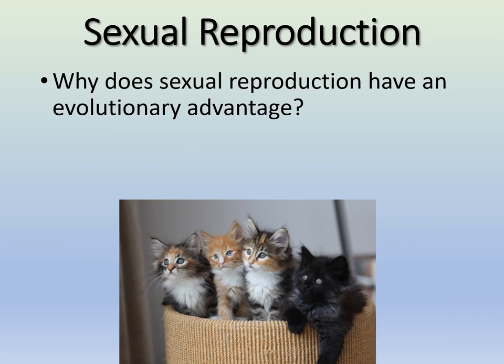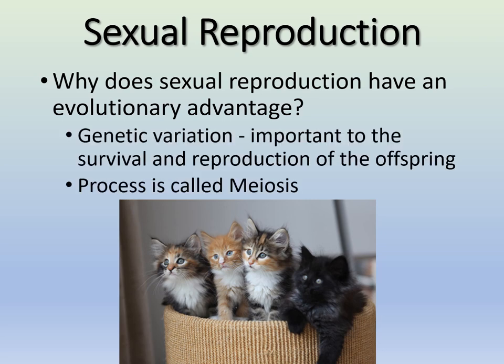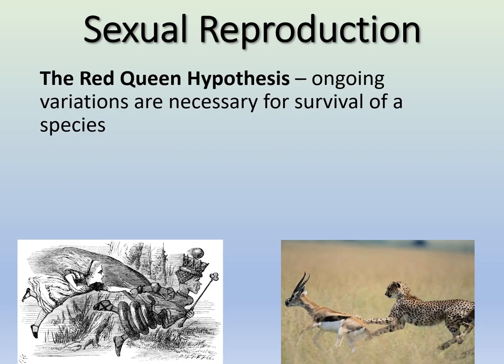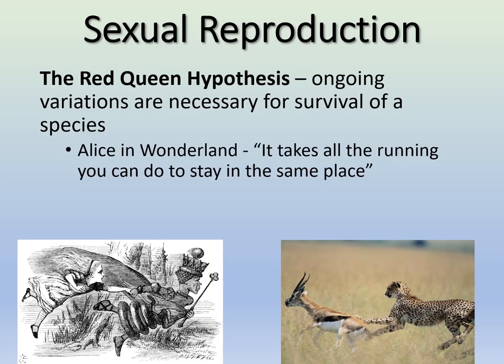Why does sexual reproduction have an evolutionary advantage? It has to do with genetic variation. It's important for the survival and reproduction of offspring — passing on variations and potential for adaptation in the future. This is why sexual reproduction is really the dominant form of reproduction in multicellular organisms. This process is called meiosis.